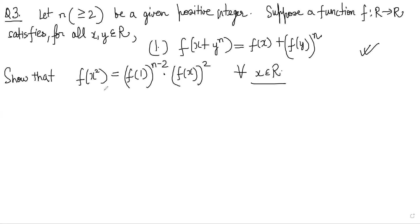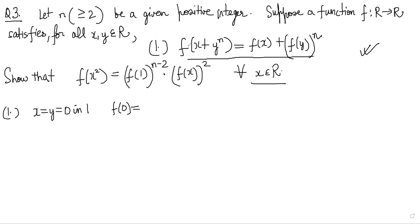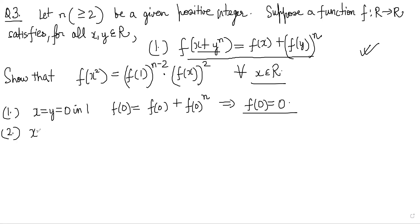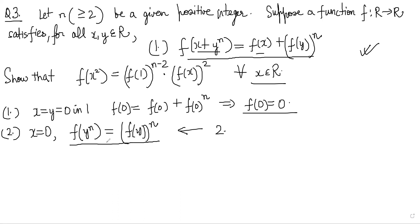We'll start by taking different values of x and y. First, put x = y = 0 in equation 1. We get f(0) = f(0+0)^n which implies f(0) = (2·f(0))^n... simplifying, we get f(0) = 0. Second, put x = 0 and keep y as is: we get f(y^n) = f(y)^n. This is our second result.